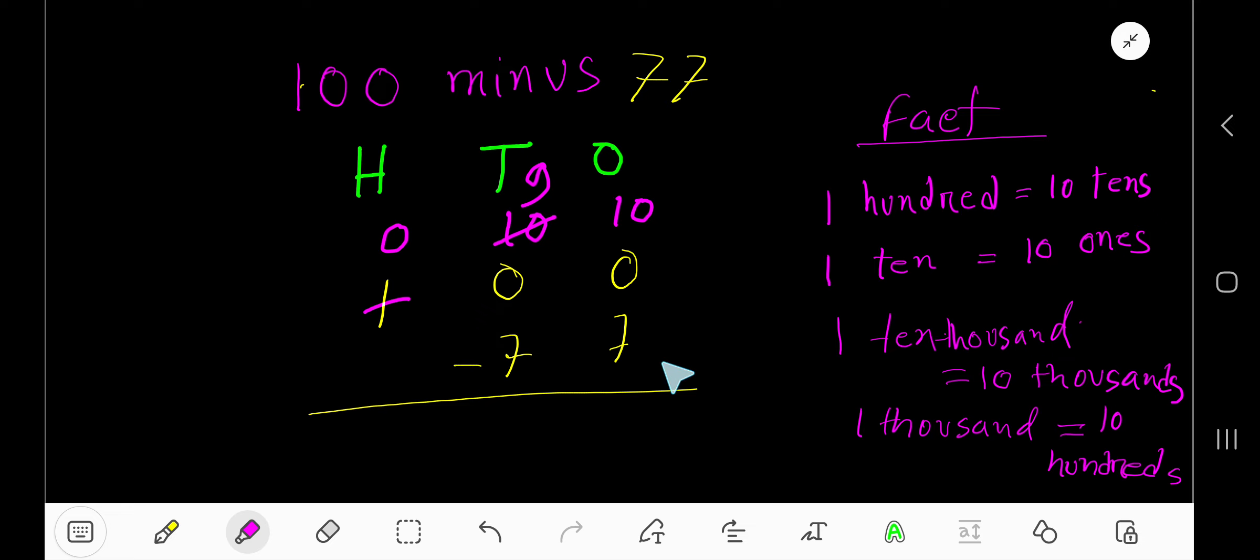Now subtract. 10 minus 7 is 3. 9 minus 7 is 2. Your answer is 23.